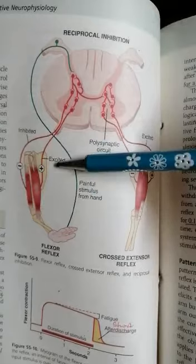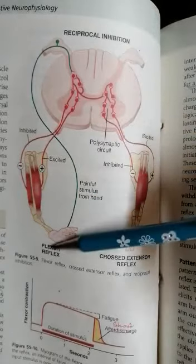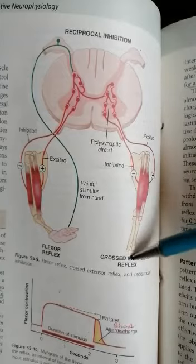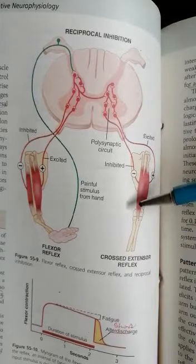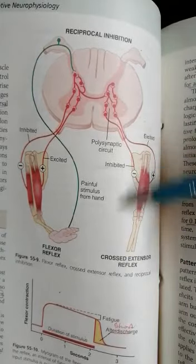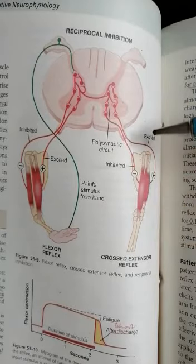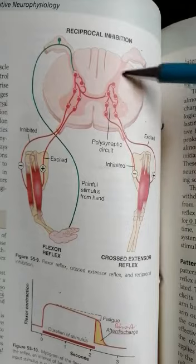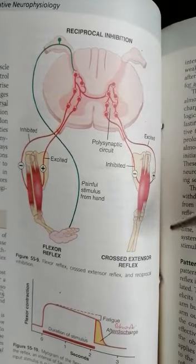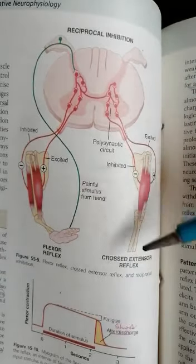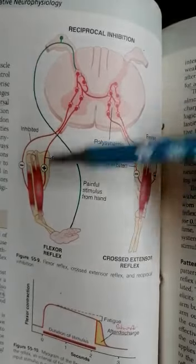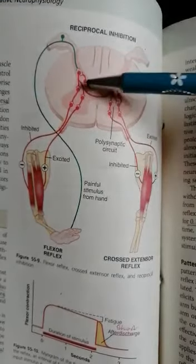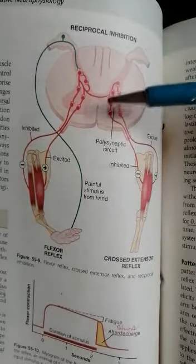When this occurs in one hand or limb, there will be a flexor reflex, and ultimately there will be a cross extensor reflex in another part of that limb — a simultaneous contraction of the other part of the limb. The circuits involved in the flexor and extensor reflexes can now be summarized.